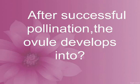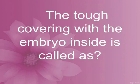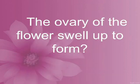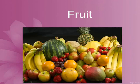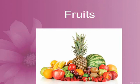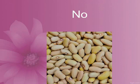After successful pollination, the ovule develops into an embryo or baby plant. The tough covering with the embryo inside is called a seed. The ovary of the flower swells up to form fruit.